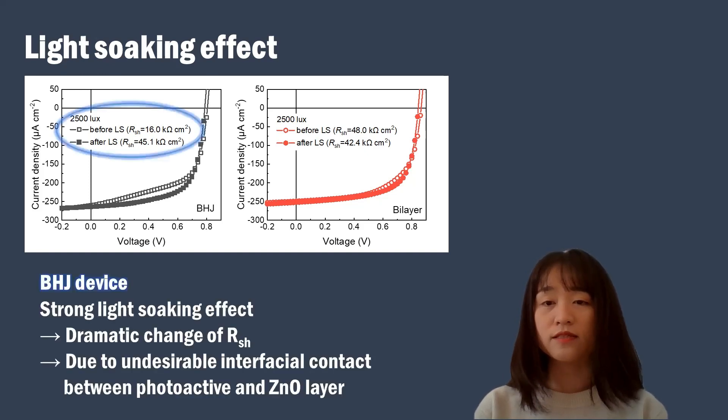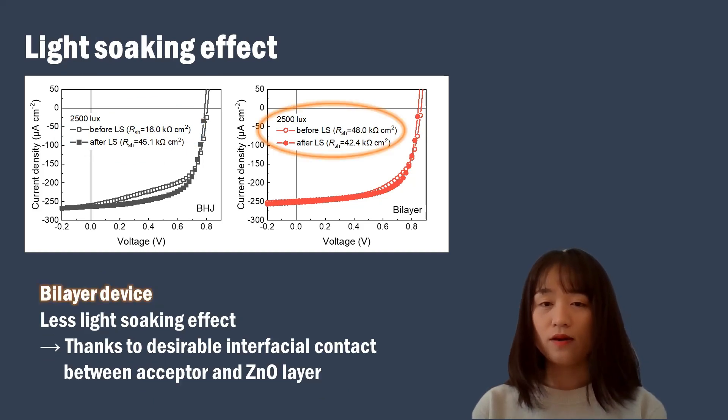Bulk-heterojunction devices, as expected, show strong light soaking effect with dramatic change of shunt resistance, possibly due to undesirable interfacial contact between photoactive and zinc oxide layer. On the other hand, bilayer devices show less light soaking effect with almost maintained shunt resistance. This can be attributed to ideal and desirable interfacial contact between pure acceptor and zinc oxide layer in bilayer structure. In other words, bilayer devices don't need additional light soaking to obtain their best device efficiency.